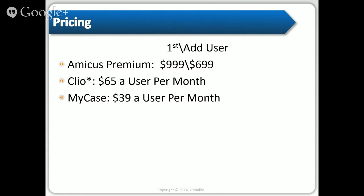Clio used to be $49 per user per month up until less than a year ago — they grandfathered everyone in, even those month-to-month. Most of these services seem to grandfather people in when they bump up prices, so there's an advantage to getting in on these services earlier. MyCase is now $39 per user per month, but three years from now as they become more popular, their prices will probably go up. I know people who hold onto accounts or transfer accounts to keep that lower price.